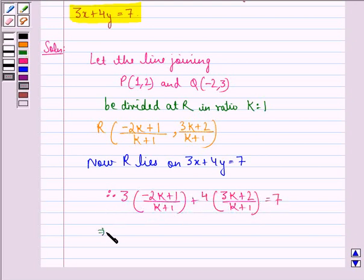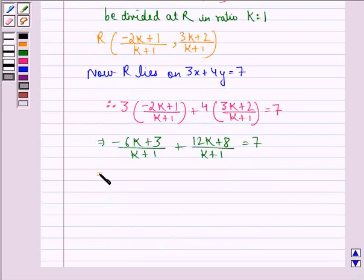This implies (-6k+3)/(k+1) plus (12k+8)/(k+1) is equal to 7. This implies (-6k+3+12k+8)/(k+1) is equal to 7.